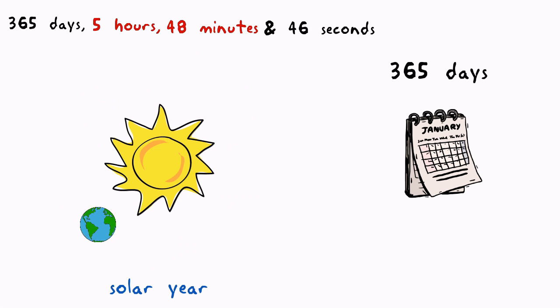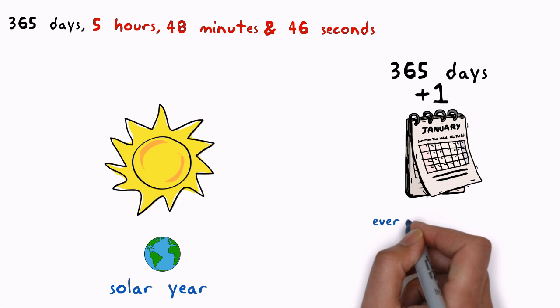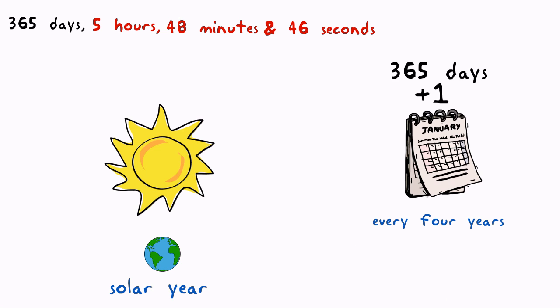Those extra hours gradually add up so that after four years, the calendar is out of step by about one day. Every four years, an extra day is added to the calendar, making the length of the year 366 days. Easy, right?